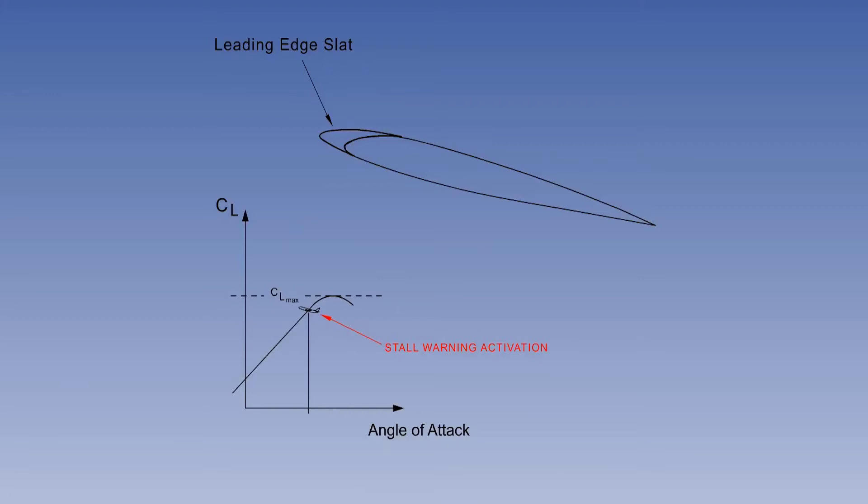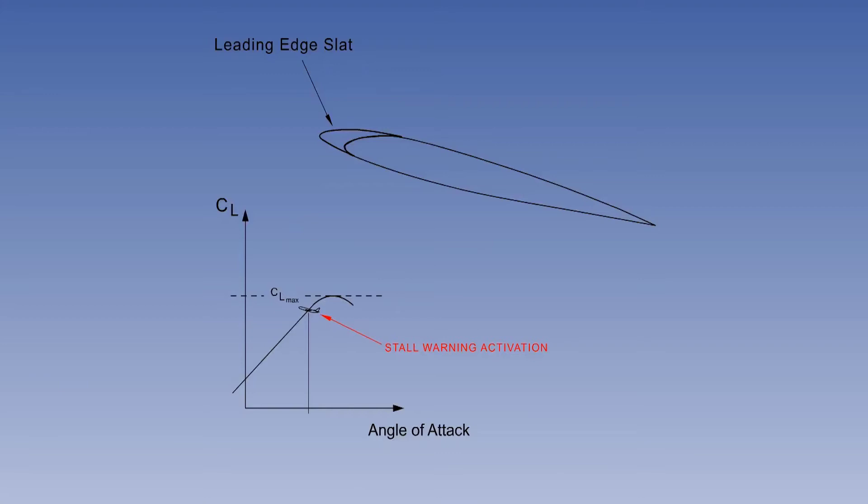Some jet transport aircraft have an automatic system that will fully extend the slats for stall protection. If the aircraft approaches the stall angle too closely, the automatic slat system will extend the slats to the fully open position.